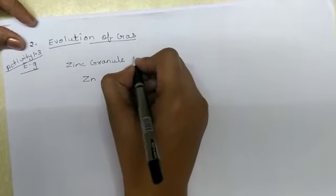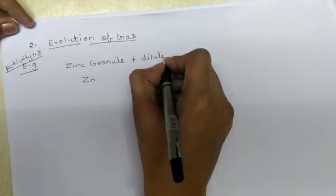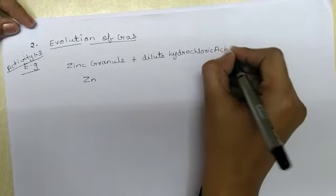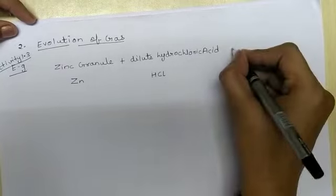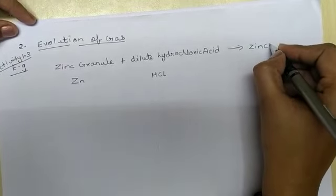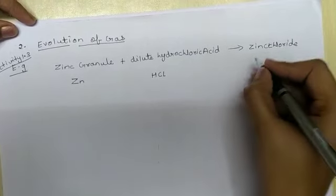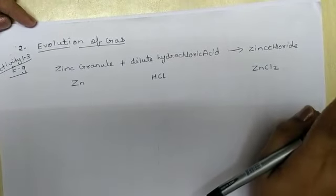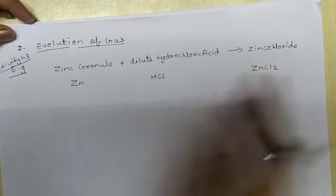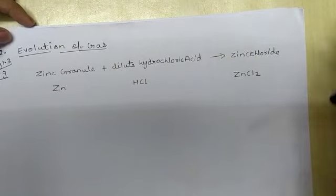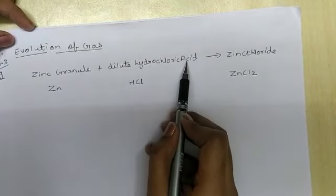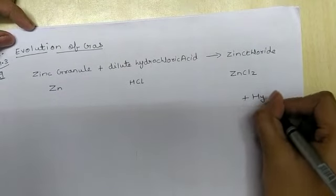We take zinc granules — the symbol of zinc is Zn. We add a dilute acid; let us take dilute hydrochloric acid, formula HCl. It gives you zinc chloride salt, ZnCl2. The formula is derived using the crossover method you studied in 9th standard atoms and molecules. So zinc granules react with dilute hydrochloric acid to give zinc chloride plus hydrogen gas.